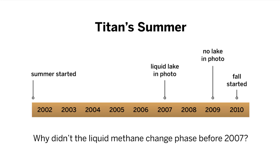Let's review the sequence of events on the timeline. Summer started. There was a liquid lake in the photo, then no lake in the photo. Fall started. Why didn't the liquid methane change phase before 2007?